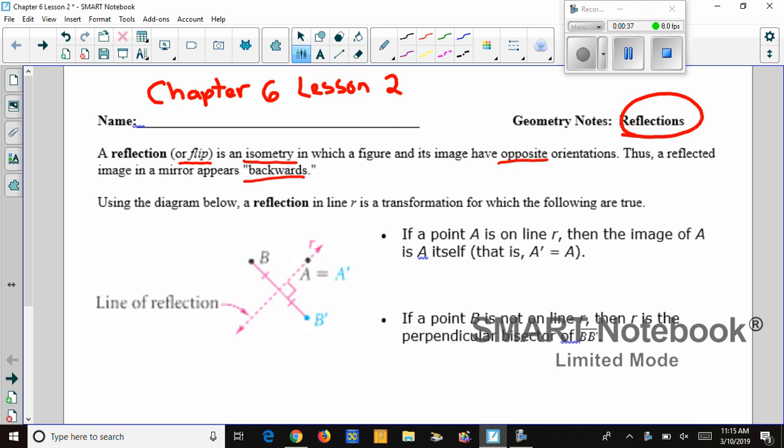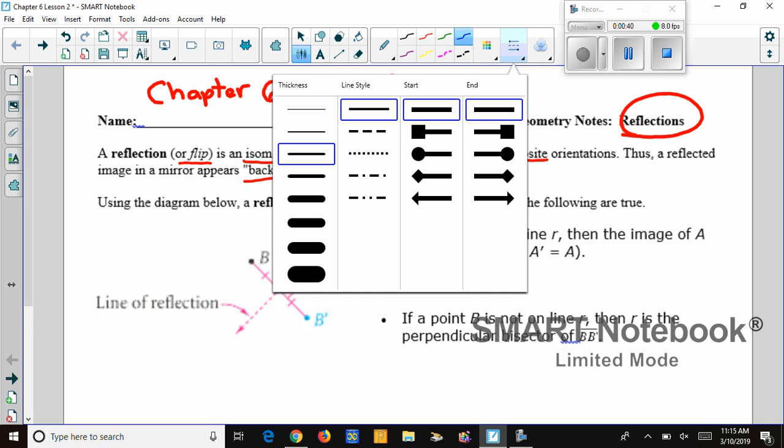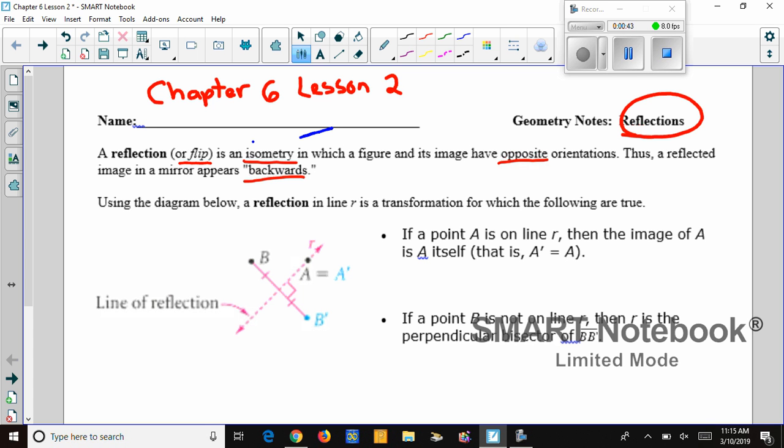Now, there's a few things going on here that I would like to clarify. Specifically, this word isometry. It simply means that there is an equal distance between the image, the line it was reflected over, and the pre-image. Just know that for our purposes, it's the same distance.